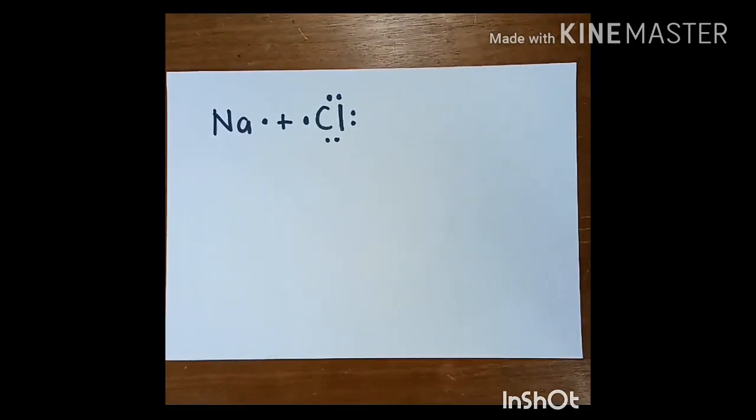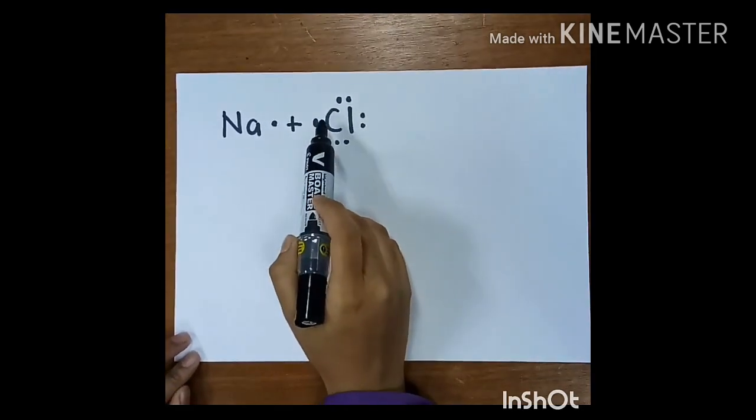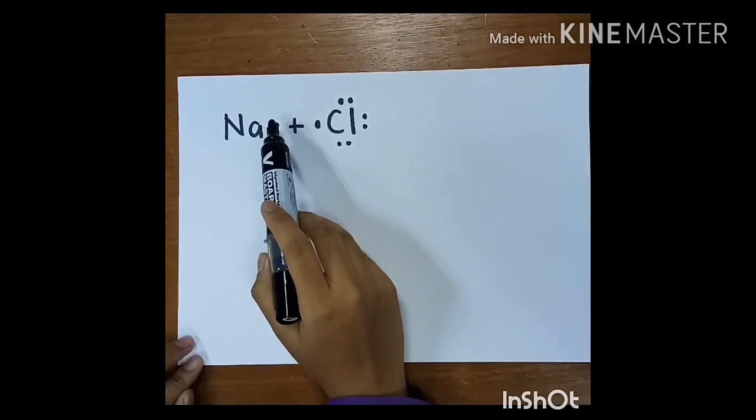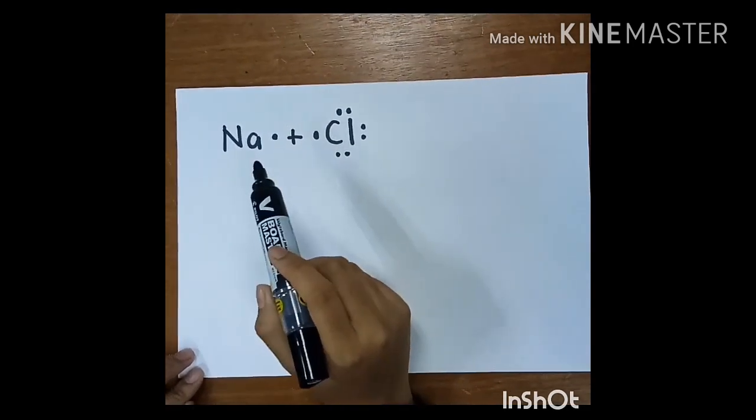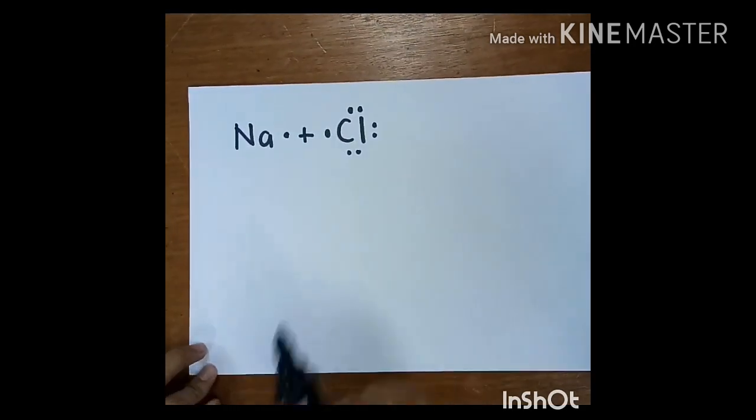In this reaction, one sodium atom loses one electron, while chlorine atom receives one electron that is donated from sodium to achieve noble gas configuration. To represent this, it will be like this.